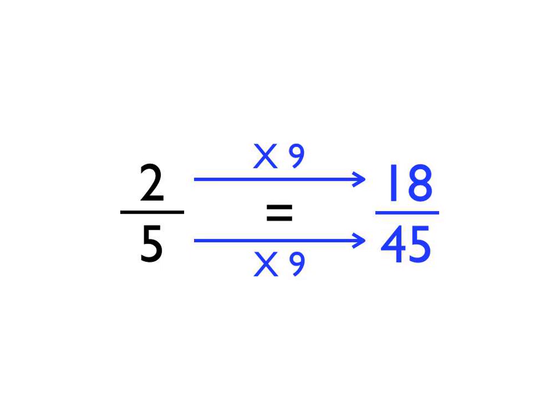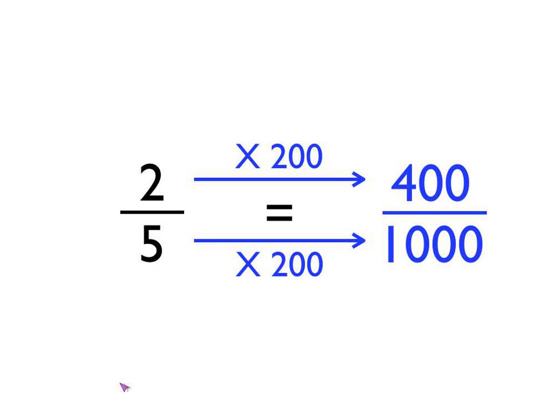You might like to times the numerator and denominator by nine, or even by two hundred. It doesn't matter which number you times them by, so long as you times the top and the bottom by the same number — the numerator and the denominator need to be timesed by the same number. That way, you'll get equivalent fractions.